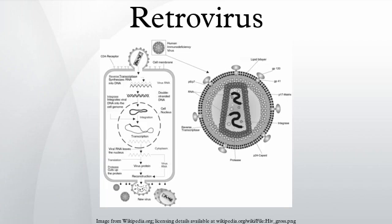Once inside the host cell cytoplasm, the virus uses its own reverse transcriptase enzyme to produce DNA from its RNA genome — the reverse of the usual pattern, thus 'retro'. This new DNA is then incorporated into the host cell genome by an integrase enzyme, at which point the retroviral DNA is referred to as a provirus. The host cell then treats the viral DNA as part of its own genome, translating and transcribing the viral genes along with the cell's own genes, producing the proteins required to assemble new copies of the virus.